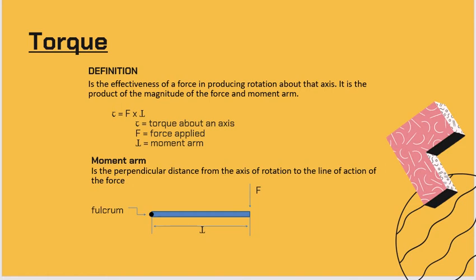So what is the definition? It's the effect of a force in producing rotation about an axis. It is the product of the magnitude of the force and the moment arm. Torque is measured — a force can cause an object to rotate about the axis, just as a force causes an object to accelerate in linear kinematics. So torque is what causes an object to acquire angular acceleration.